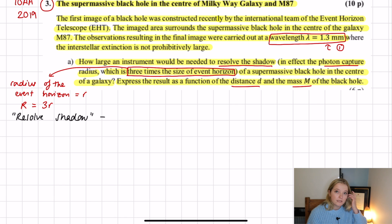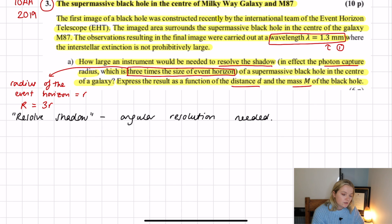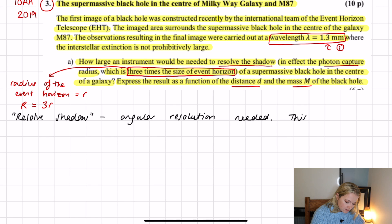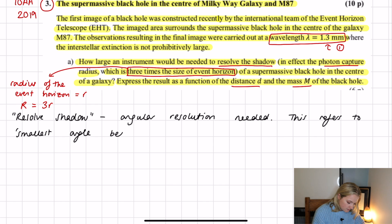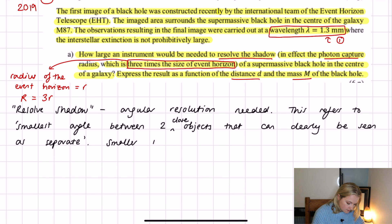Resolving the shadow means we need to use angular resolution. Angular resolution refers to the smallest angle between two close objects that can be clearly seen as separate. The smaller the angle, the better the resolution.